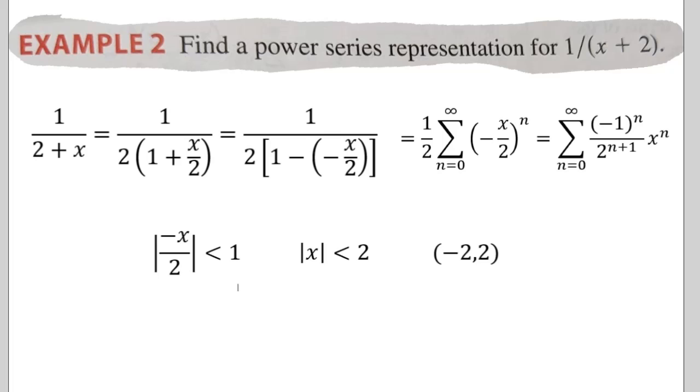In this example, I start off with the problem 1 over x plus 2. In this problem, remember we want to get back to the 1 over 1 minus x. So the first thing I have to do is pull out a 2, and then I have to make that be 1 minus something.